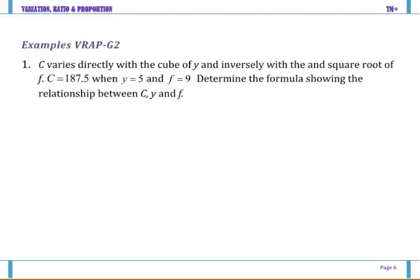If c varies directly with the cube of y, so c varies directly with the cube of y, and inversely with the square root of f. So that means we can combine that to be c equals k y cubed all over the square root of f.